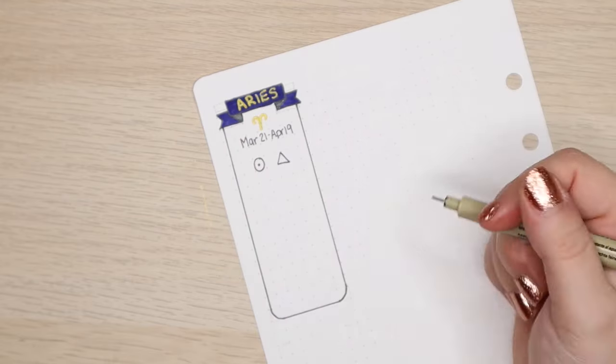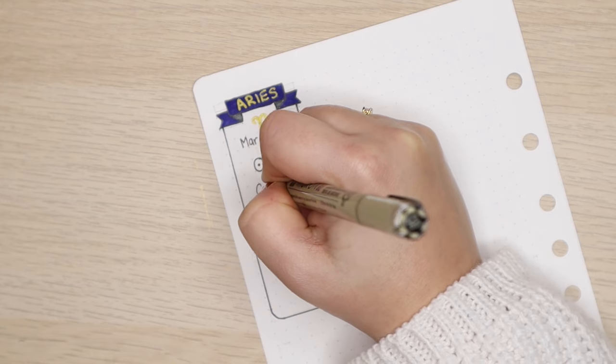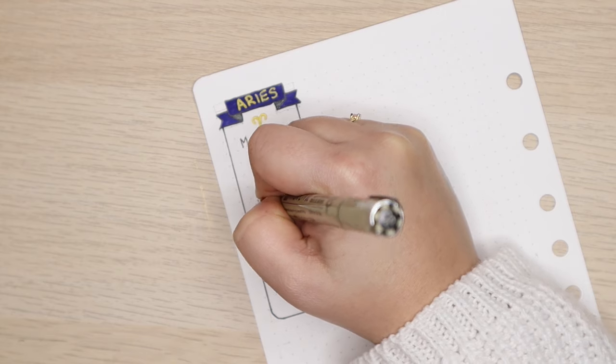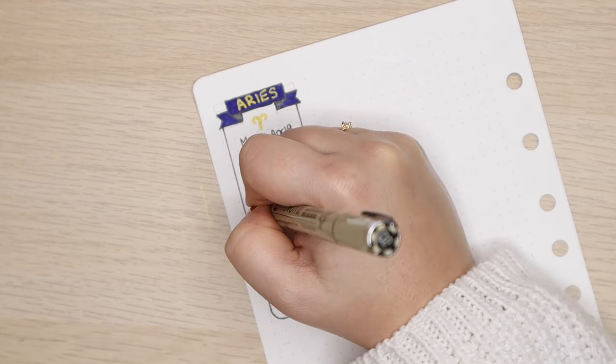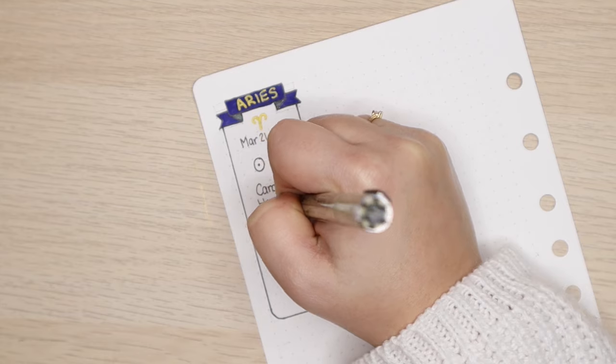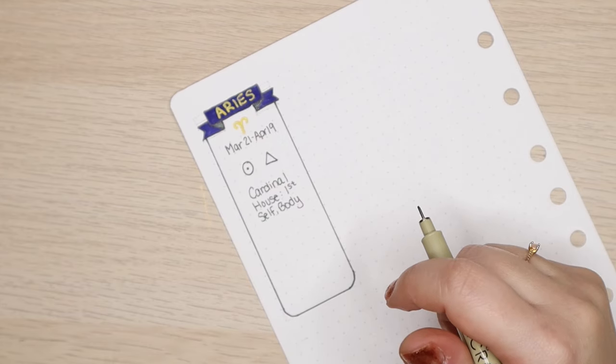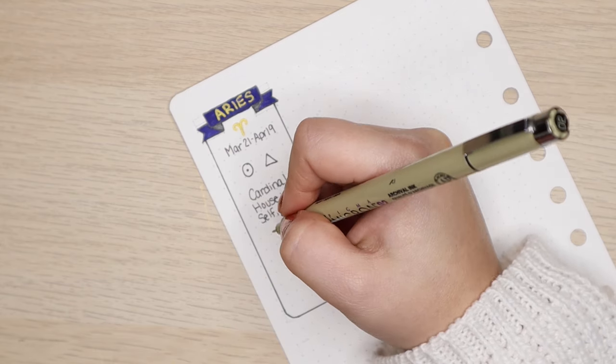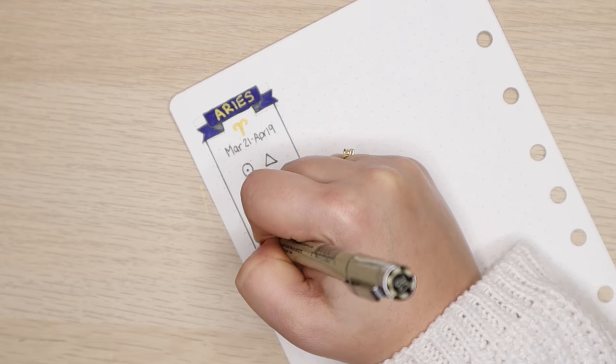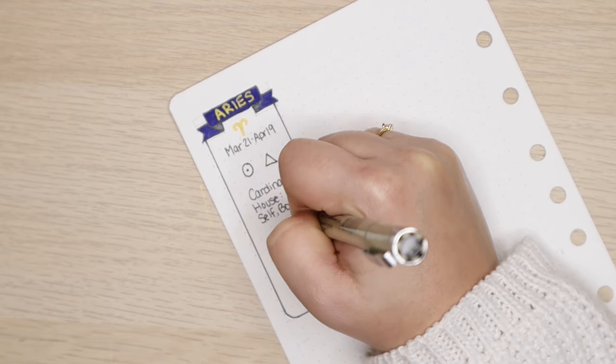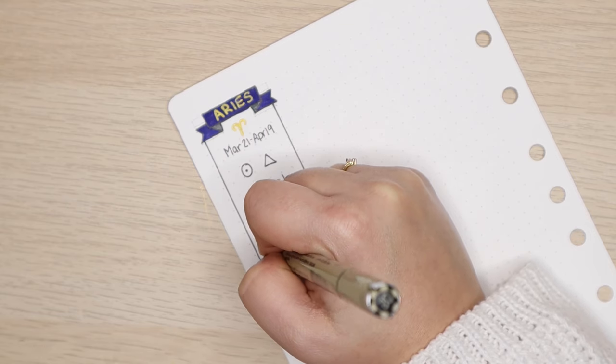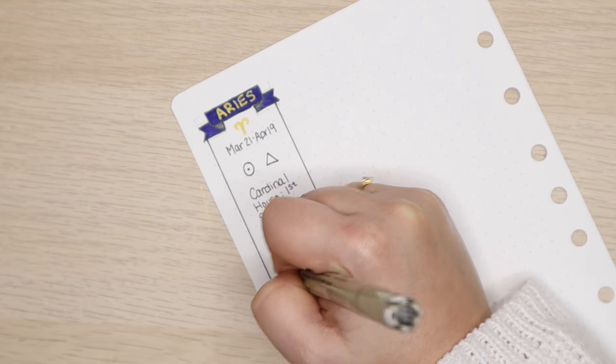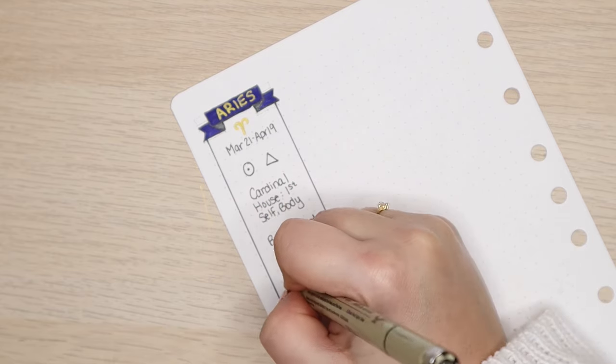Each sign is associated with a certain element: fire, air, earth, or water. In this case, it is fire. Next, I have what is called the sign's modality, which can be cardinal, fixed, or mutable. Cardinal signs are assertive. Fixed signs are very grounded and steady. And mutable signs are flexible and adaptable. Aries happens to be a cardinal sign. As we know from the houses spread, Aries rules the first house, which deals with the self and the body. And then I've just written some strengths of those with an Aries sun sign. They're brave, direct, independent, and also some weaknesses. They can be aggressive, selfish, and pushy.